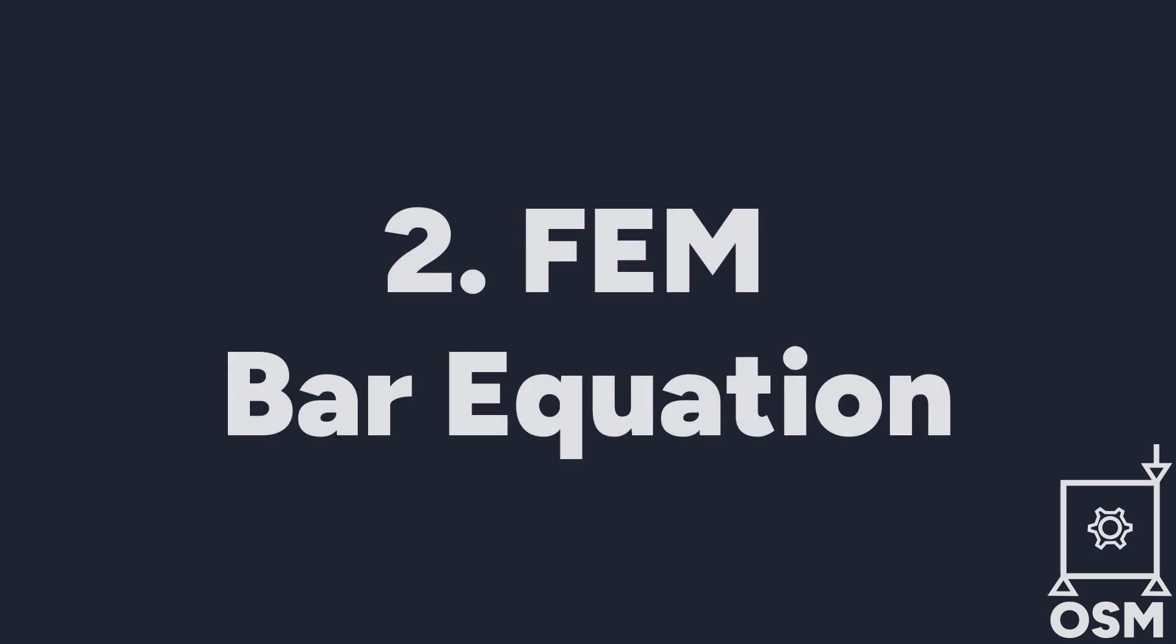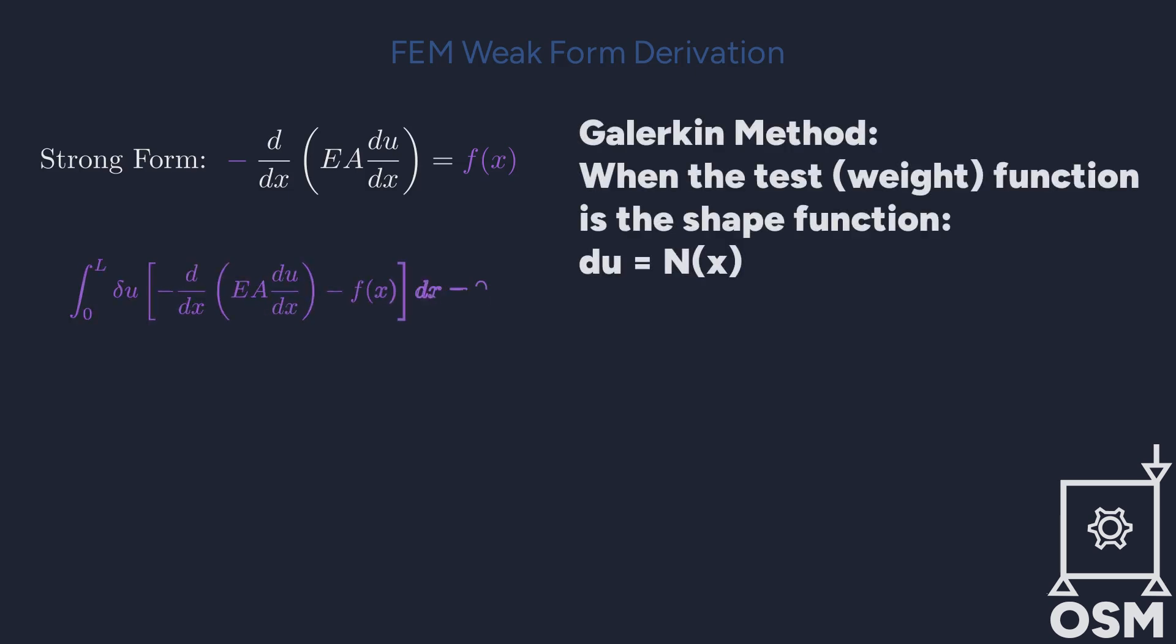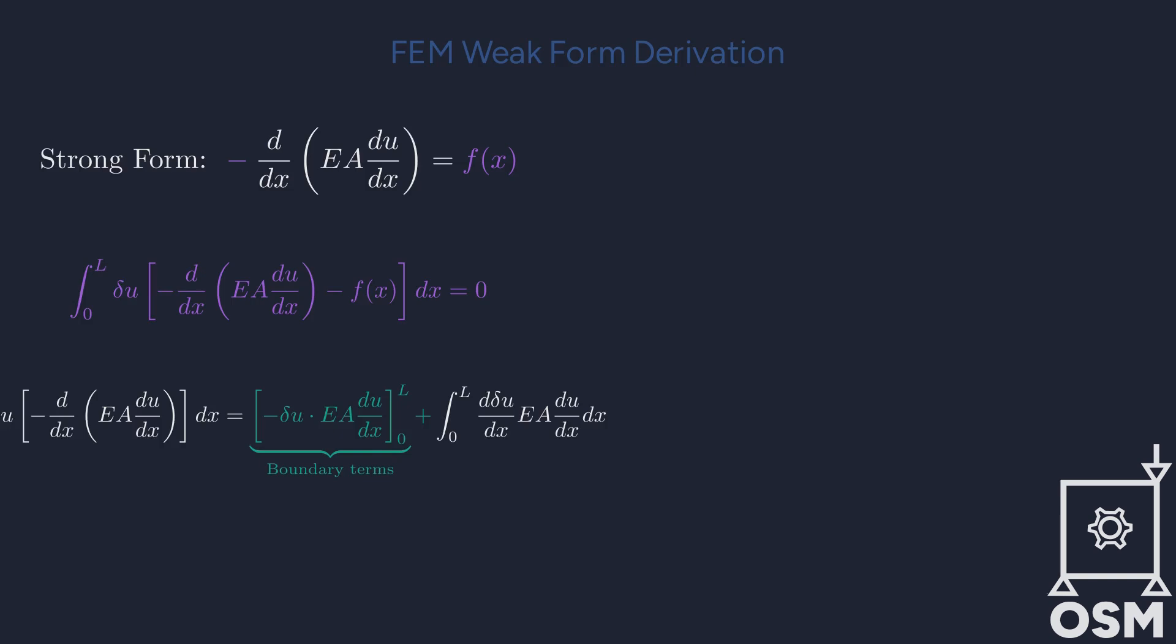In this animation, we derive the weak form for a 1D bar under axial load. We start from the strong form. The internal axial force is balanced by the external load fx. To apply the finite element method, we multiply by a test function and integrate. This is the Galerkin method. Integrating by parts moves the second derivative of the trial function, reducing continuity requirements.